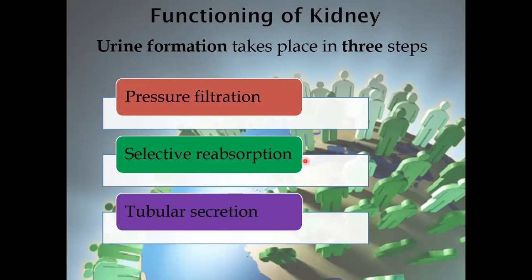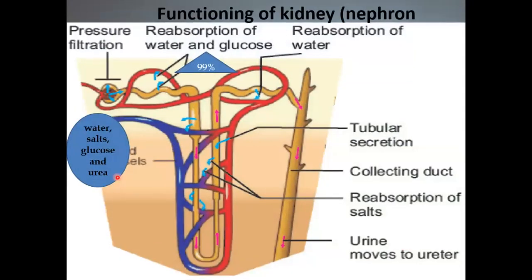The first step is pressure filtration, which takes place in the renal corpuscles — composed of the cup-shaped Bowman capsule and the glomerulus. As a result of pressure filtration, water, salts, glucose, and urea are filtered out through the wall of the capillaries into the Bowman capsule. The resulting fluid is called the glomerular filtrate. When blood enters the kidney by the renal artery, it goes to many arterioles and then to the glomerulus. Blood pressure is very high here because the diameter of the blood vessels decreases into the glomerulus through the capillaries, which are smaller than arteries. So most of the water, glucose, and urea of the blood is forced out of the glomerular capillaries and passes into the Bowman capsule.